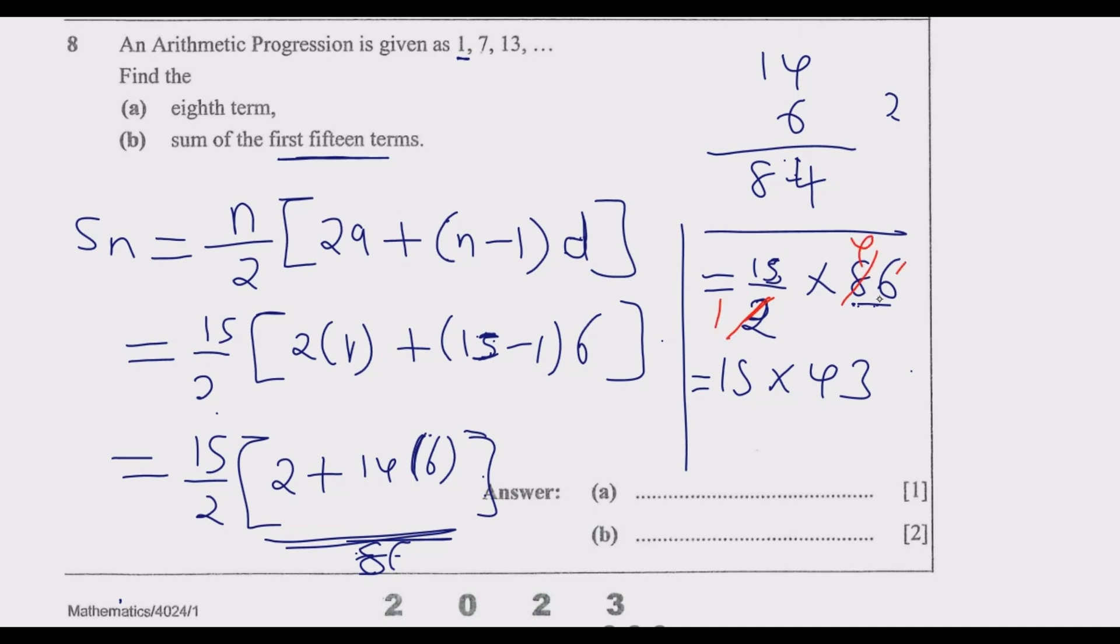So it will be 15 multiply by 43. Remember, in an exam this is the examiner's space, but because I don't have space I'm going to use it here. But you can write it on top somewhere. I just want to emphasize so that you don't make the same mistake.